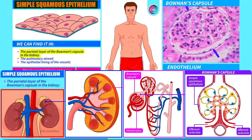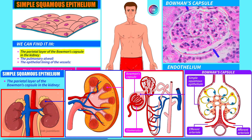Here we have the kidney. If we zoom in, we will see the functional unit of the kidney — the nephron. This part is called the glomerulus and is ball-shaped, enveloping the anatomical structure called the Bowman's capsule. If we observe it more closely, we can see the afferent arteriole, which supplies blood, and the efferent arteriole, which takes it away. Covering the Bowman's capsule on the inside, we have a single layer of epithelial cells.